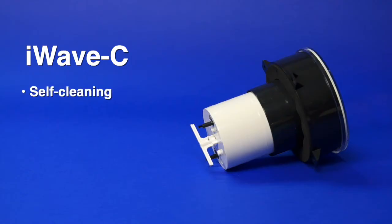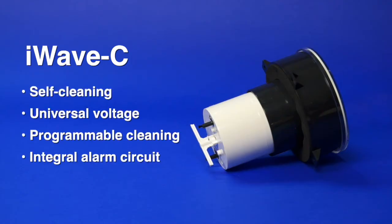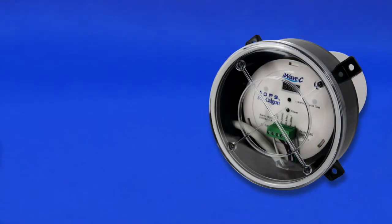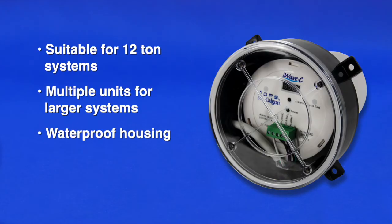It features programmable cleaning and an integral alarm circuit. It requires no maintenance for the life of the device. The iWave C is suitable for 12-ton systems and multiple units can be applied to larger systems. It has a waterproof housing and can be installed indoors or outdoors.